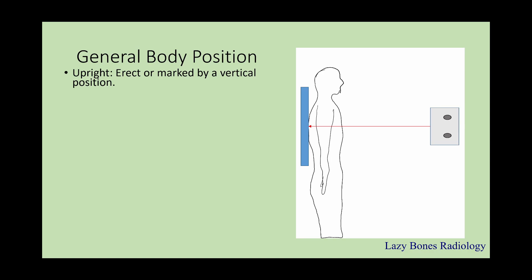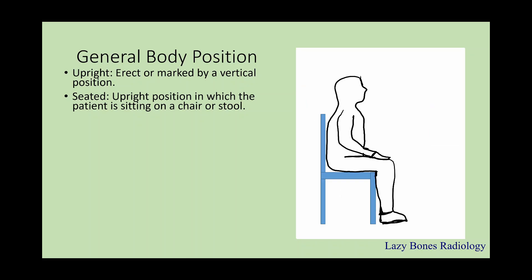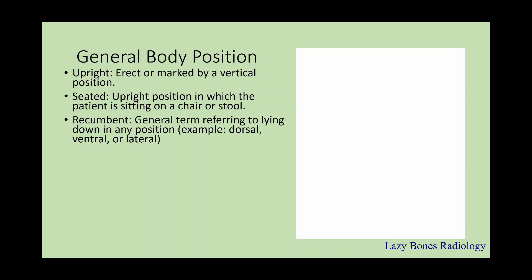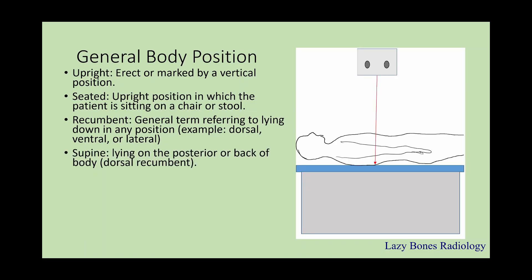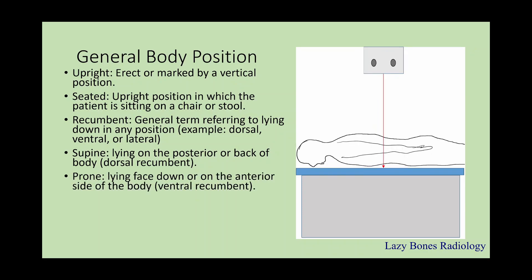General body positions. Upright: this is when the patient stands erect or is marked by a vertical position. Seated: this is an upright position in which the patient is sitting on a chair or stool. Recumbent: this is a general term referring to lying down in any position — for example, dorsal, ventral, and lateral. Supine: this is where you lie on your posterior or the back part of your body, also known as dorsal recumbent. Prone: this is where you lie face down or the anterior side of the body is down, also known as ventral recumbent.